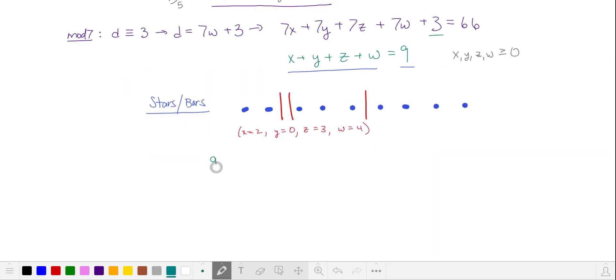This is the same as counting the number of ways of arranging our 9 integers and our 3 dividers for a total of 12 objects, and choosing 3 of them to be our bars. That's 12 choose 3, which gives us 220 solutions.